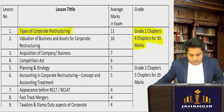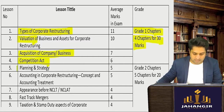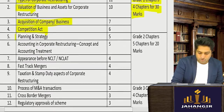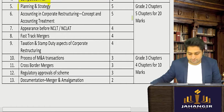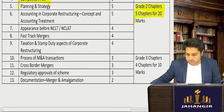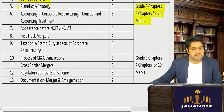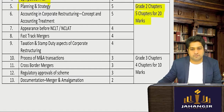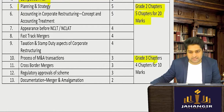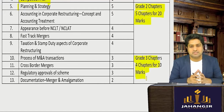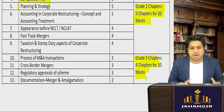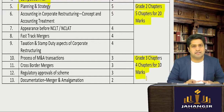The grade one topics in corporate restructuring include types of corporate restructuring, valuation, acquisition, takeover, and the Competition Act. Grade two chapters are 5 chapters coming for around 20 marks in your exams. Grade three chapters are 4 chapters that come for around 10 marks. This is the average across past multiple attempts, and new exams don't shift too much from the average.